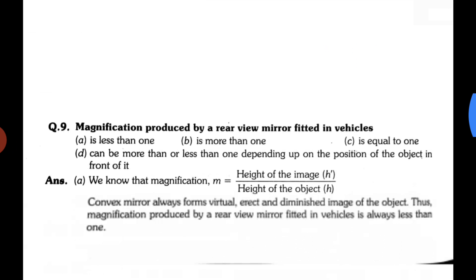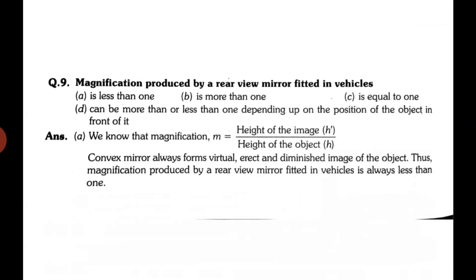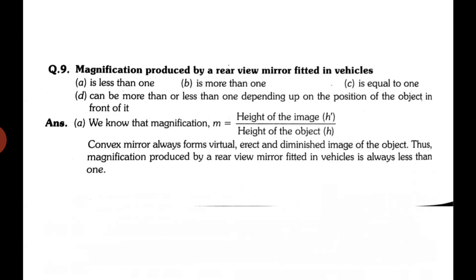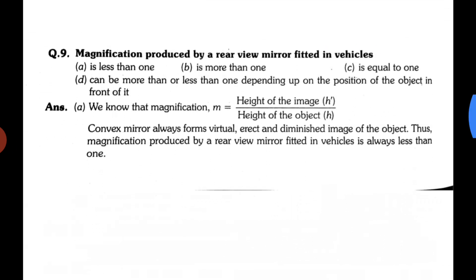Next question: magnification produced by a rear-view mirror fitted in vehicles. The rear-view mirror is a convex mirror. Convex mirrors always form diminished images, so magnification is always less than 1. The answer is option A: less than 1.